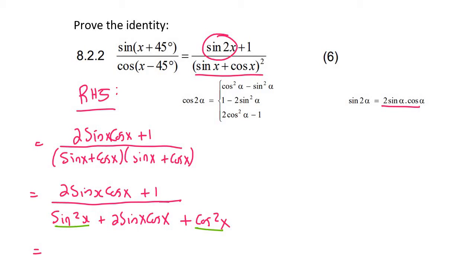So at the top we're going to have 2 sin x cos x plus 1 over 1 plus 2 sin x cos x, because the sin squared x plus cos squared x is equal to 1. You know from grade 11, it's a grade 11 identity.